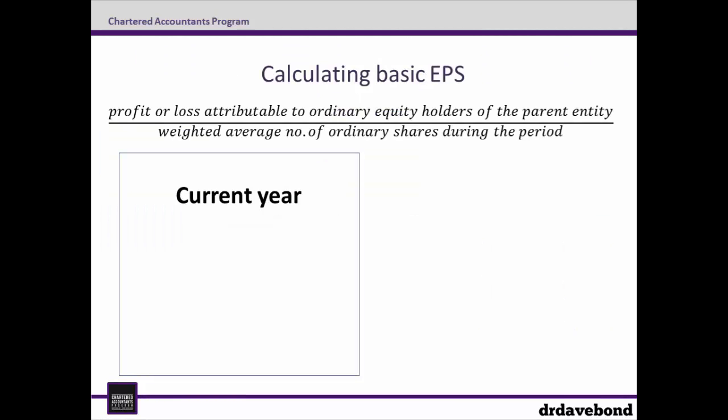To calculate the basic EPS, we take the earnings we calculated of £22,176,750 and divide it by the weighted average shares of 3,642,395, which gives us an EPS in the current year of £6.09.